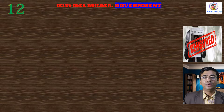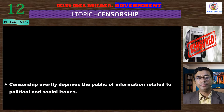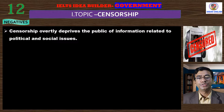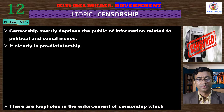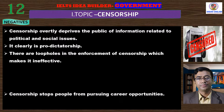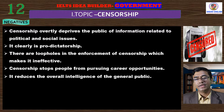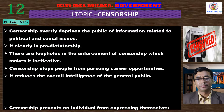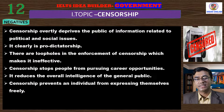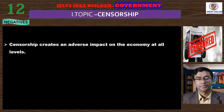Now we'll move to the negative aspects of censorship. At the very beginning we can tell that censorship overtly deprives the public of information related to political and social issues. It is clearly pro-dictatorship. There are loopholes in enforcement of censorship which makes it ineffective. Censorship stops people from pursuing career opportunities. It reduces the overall intelligence of the general public. Censorship prevents an individual from expressing themselves freely. It shifts where the responsibility of consumption is in society. Censorship creates an adverse impact on the economy at all levels.